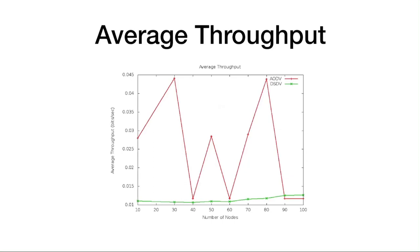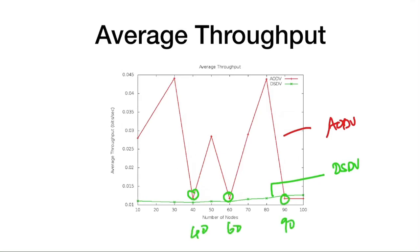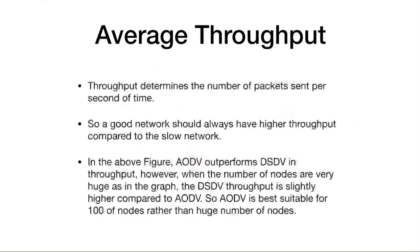For average throughput in bits per second, AODV (red) again outperforms DSDV (green). Though there are some dips at 40, 60, and 90 nodes for AODV, it is still higher than DSDV overall. Throughput determines the number of packets sent per second; a good network should always have higher throughput. AODV outperforms DSDV in average throughput.